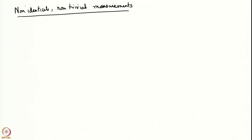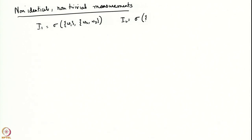What are we going to assume? We are going to assume that the information of agent 1 is sigma of {ω₁} and {ω₂, ω₃}. So ω₂ and ω₃ have been put in one set for agent 1. Similarly, for agent 2, the information of agent 2 is sigma of {ω₁, ω₂} and {ω₃}.